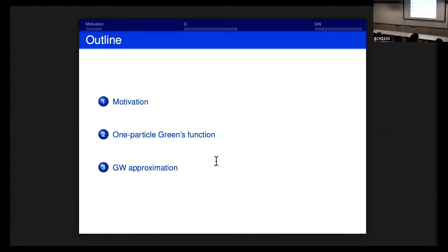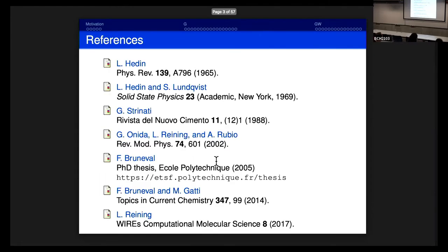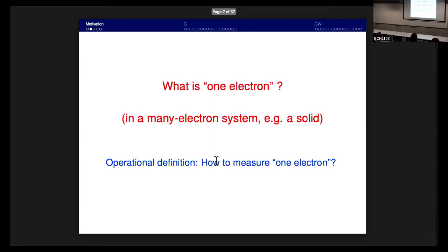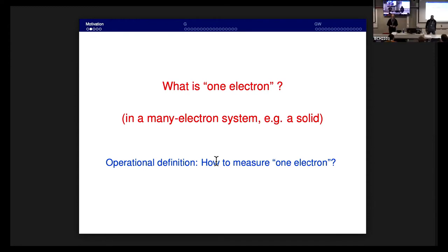We will start from the basics. What is one electron? Of course this seems trivial, but it is not trivial if you are in a many-body system. If you have a system of N electrons and you want to define what one electron is, what is the best definition? This has to be related to an operative definition — how do we measure the properties of one electron in a system of N electrons in a solid?